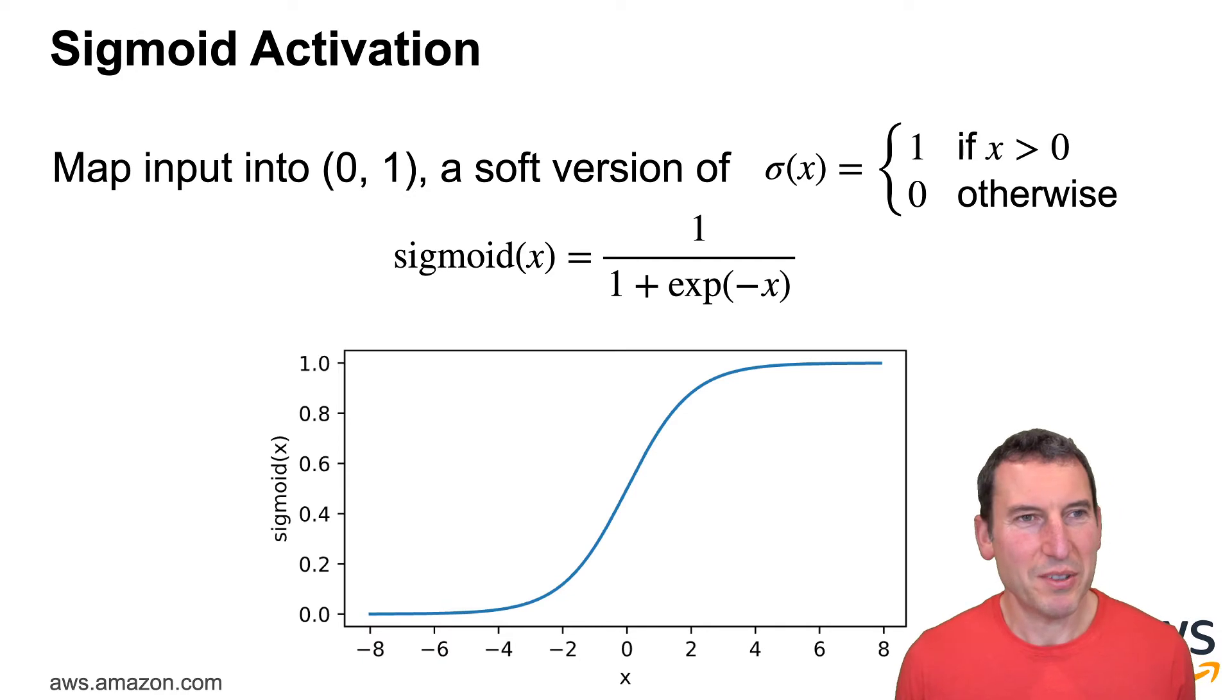Now, obviously, the question arises, well, if that's the case, what kind of non-linearity should you pick? A really popular choice for a long time used to be a sigmoid. So you map the input into the interval 0, 1, for instance, by using 1 over 1 plus e to the minus x. It's non-linear and things work quite nicely.